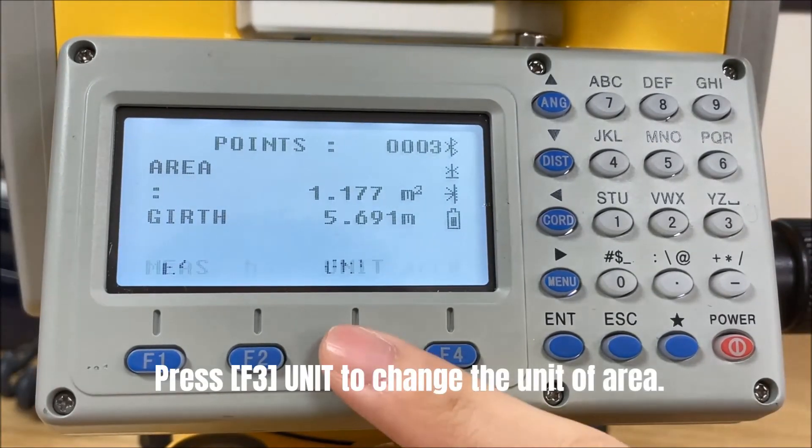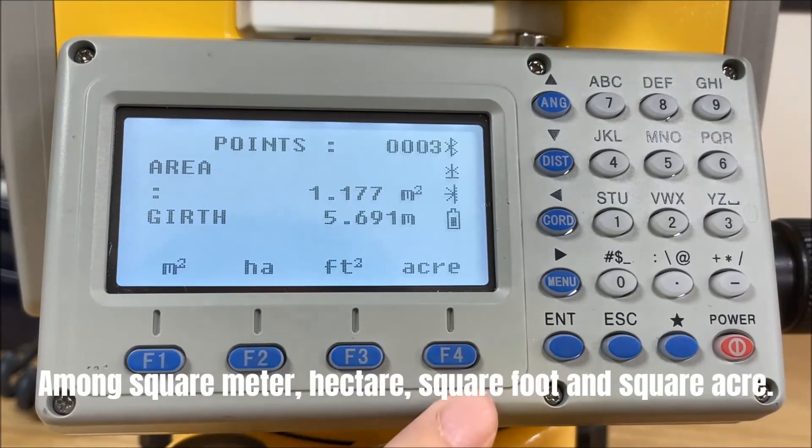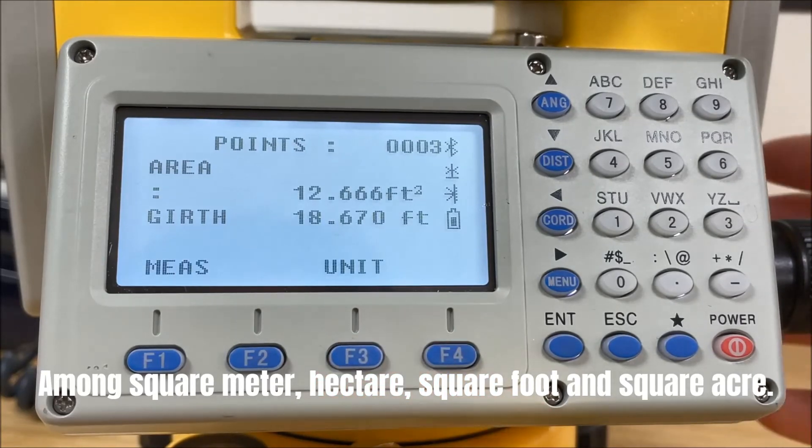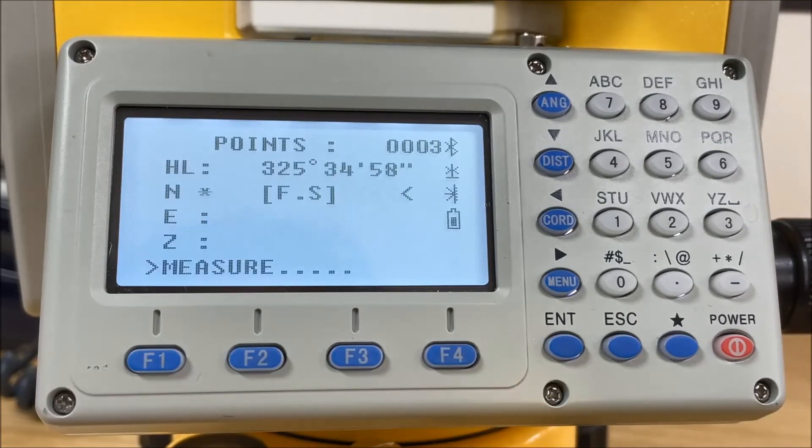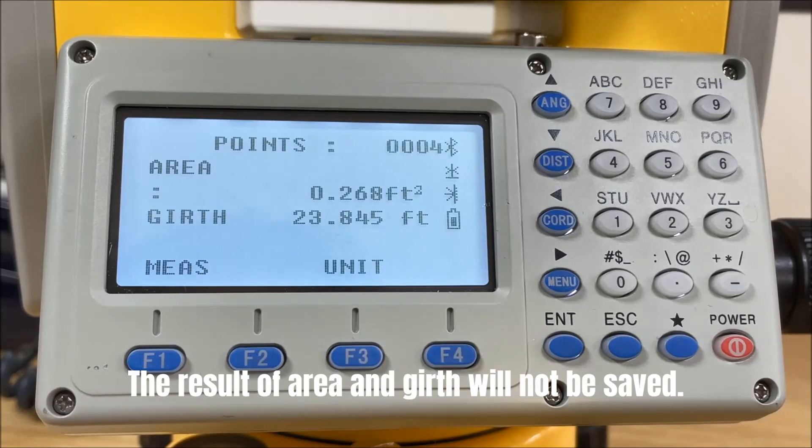Press unit to change the unit of area among square meter, hectare, square foot and square acre. The result of area and girth will not be saved.